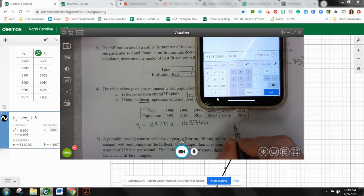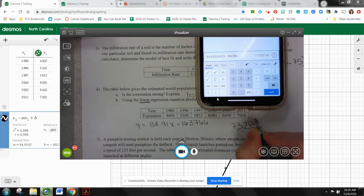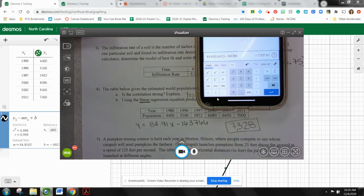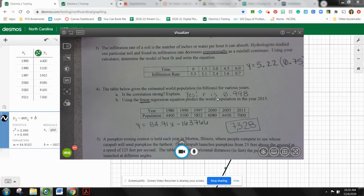So we would predict that it would be 7,328 people. I can't have a decimal there because these are people, not money.